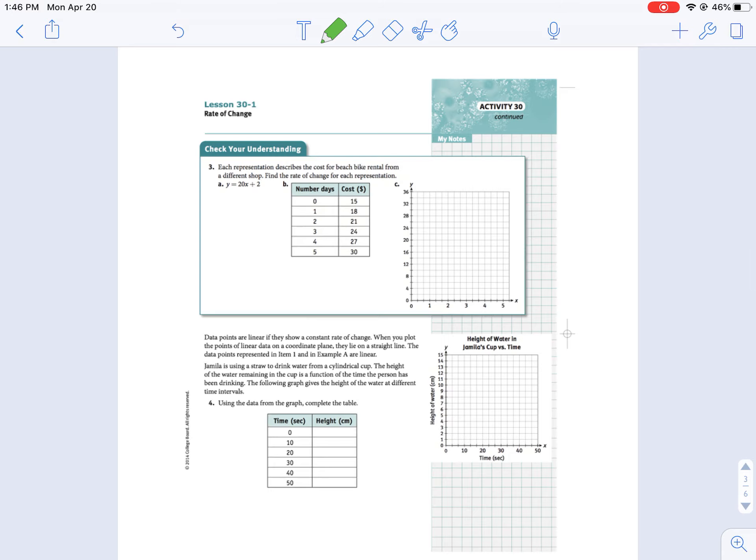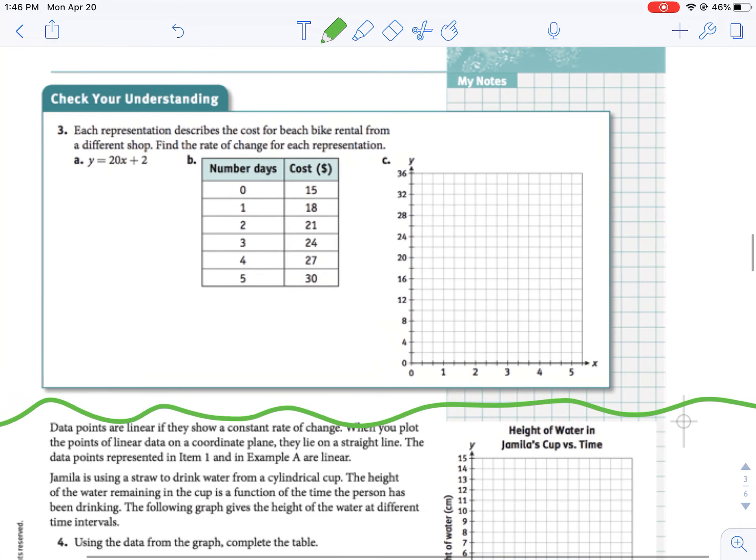All right, so if we take a look at example three, and this is actually where we're going to stop for today. I'm going to break this up into two days. It says each representation determines the cost of the beach bike rental from a different shop. Find the rate of change for each. This one is missing, or letter C is missing a graph again, so I don't know what the publisher was thinking, but it was supposed to have a point over here at 4, 28. So there was supposed to be a point here, and that point is over 4, up 28, and then there was supposed to be a point at (0, 0). So there's our line going through there.